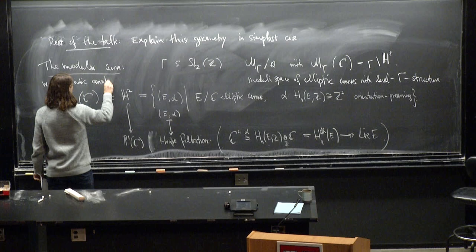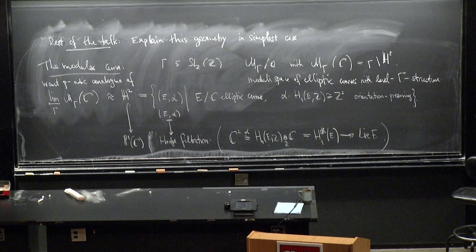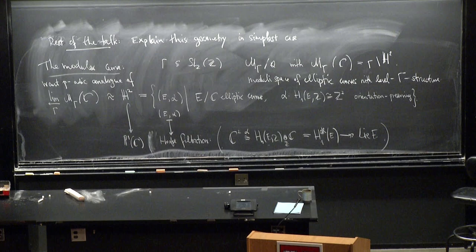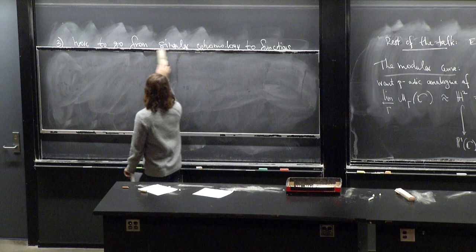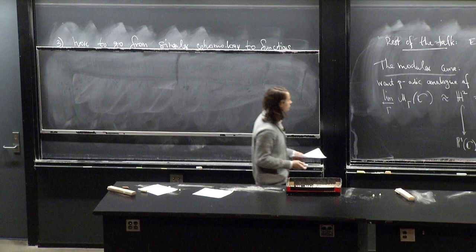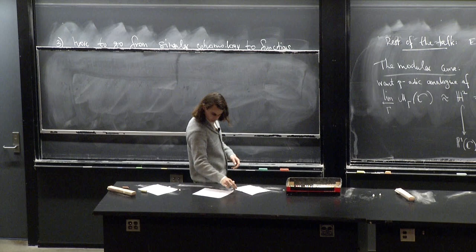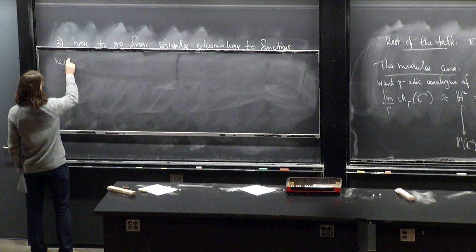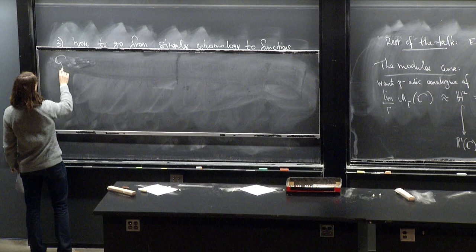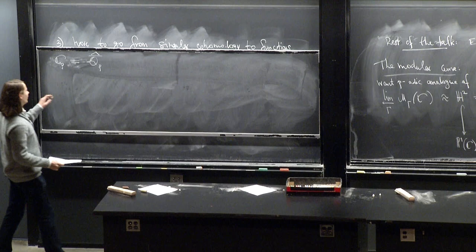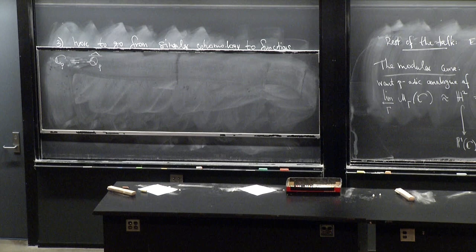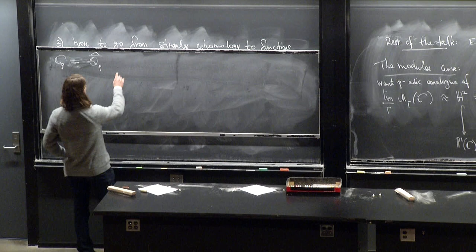We want a p-adic analog of that. So I will now work over this p-adic analog of the complex numbers, which is just Qp, take an algebraic closure, but now it's not complete anymore, so complete it again. And then it turns out it's still algebraically closed, so this is some complete algebraically closed field containing the p-adic analog of the complex numbers. We need an analog of the Hodge filtration.